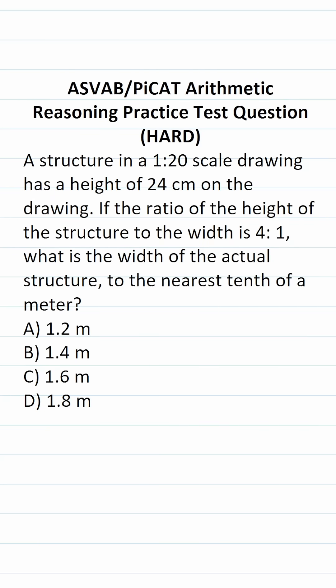This arithmetic reasoning practice test question for the ASVAB and PICAT says: A structure in a 1:20 scale drawing has a height of 24 centimeters on the drawing. If the ratio of the height of the structure to the width is 4 to 1, what is the width of the actual structure to the nearest tenth of a meter?